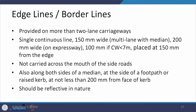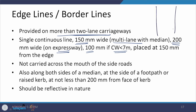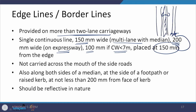Edge lines are provided on more than two lane carriageways as continuous lines. Their width depends on conditions: 150 mm for a multi-lane highway with a median, 200 mm for an expressway, and 100 mm if the carriageway is less than 7 meters wide. They are placed at 150 mm from the edge of the carriageway. Where a median is provided, edge markings demarcate the median and should be at least 200 mm from the face of the kerb stone.